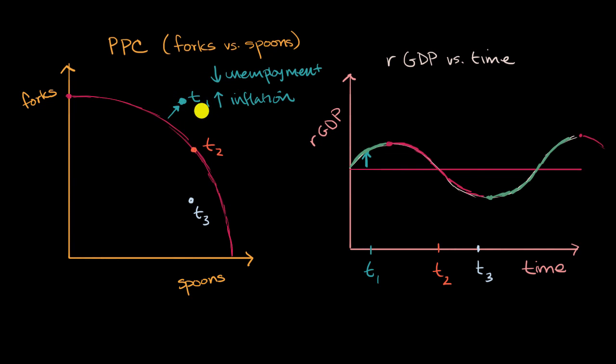So this positive output gap is happening during an expansion. But you could have a situation where you're right here, where you have a positive output gap, where you're operating beyond your potential, but the economy has started to shrink. So it's not always the case, even though positive output gaps get associated with expansions, it's not always during an expansion.